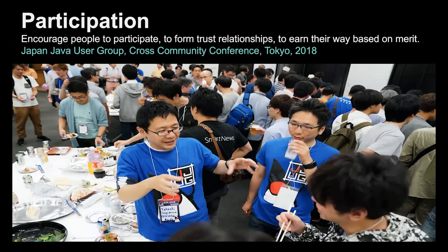Participation is something that I think the Japanese do really well. This is an image from Tokyo — a couple of my friends, Takashi and Yohei. It's a Java User Group cross-community conference. What's really interesting is they specifically have about 20 people in blue shirts on the organizing committee running this conference — a non-trivial number. You can tell an event that's run by the community versus one run by a company. This is a true community event.